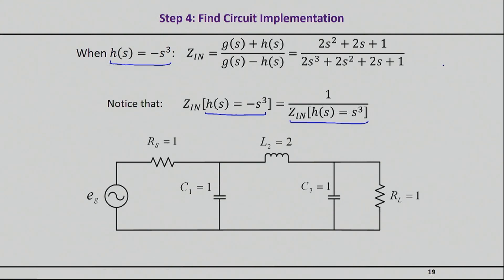So, it turns out, either when you go through the same synthesis process, or you just make this observation, that you basically will end up with exactly the same elements, except now the first inductance is not series inductance. It has actually become a shunt capacitor. The second element, which was a shunt capacitor, has now become a series inductance, and so on. But the values are identical.